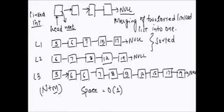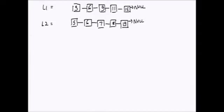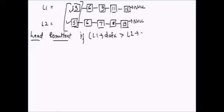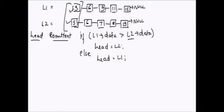First we have to find the head of the resultant linked list. The resultant linked list head will be one of the two smallest elements from the two linked lists. So we compare the first nodes: if L1's data is greater than L2's data then head equals L2, else head equals L1.